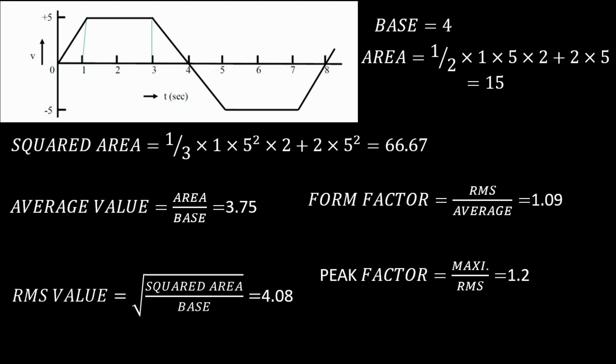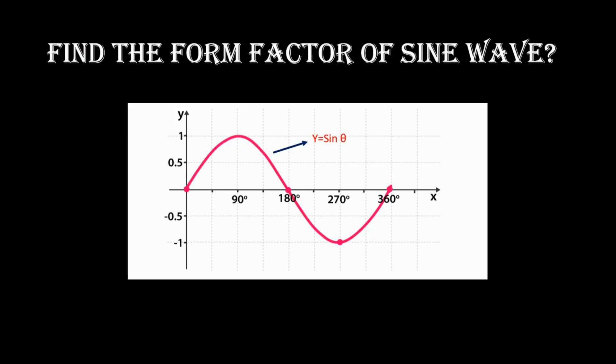So for both curves we now know how to calculate form factor and peak factor. Next we are going to solve a different type of problem where the shape is not a standard shape for which a formula is known. Instead, the equation for the curve will be given. For example, a sine wave — the equation for the curve is sine theta. To find the area under the curve we integrate sine theta with respect to d theta, and to find the squared area we integrate sine squared theta with respect to d theta.